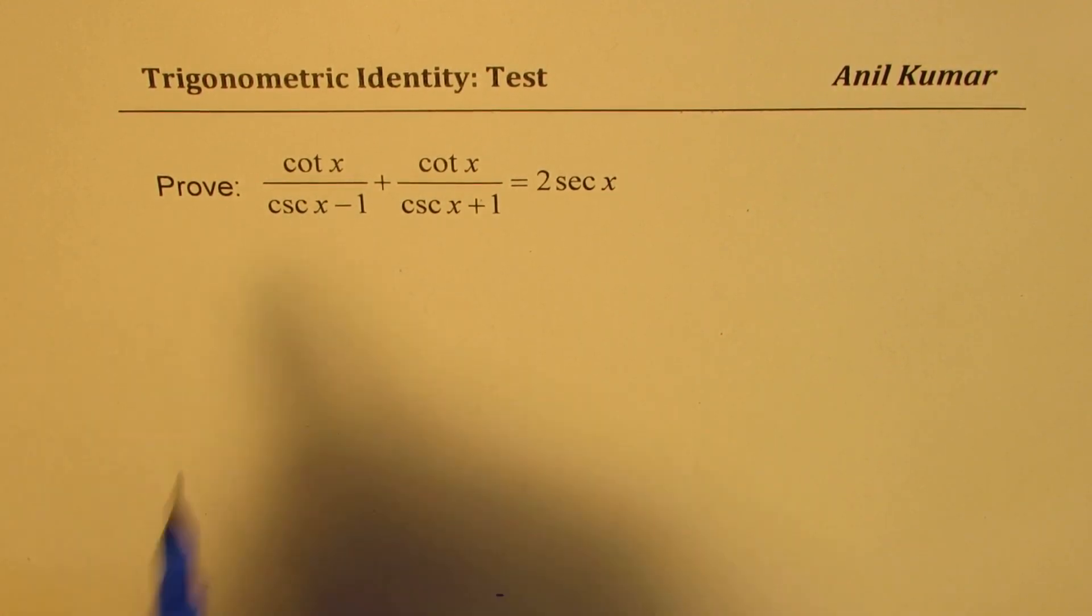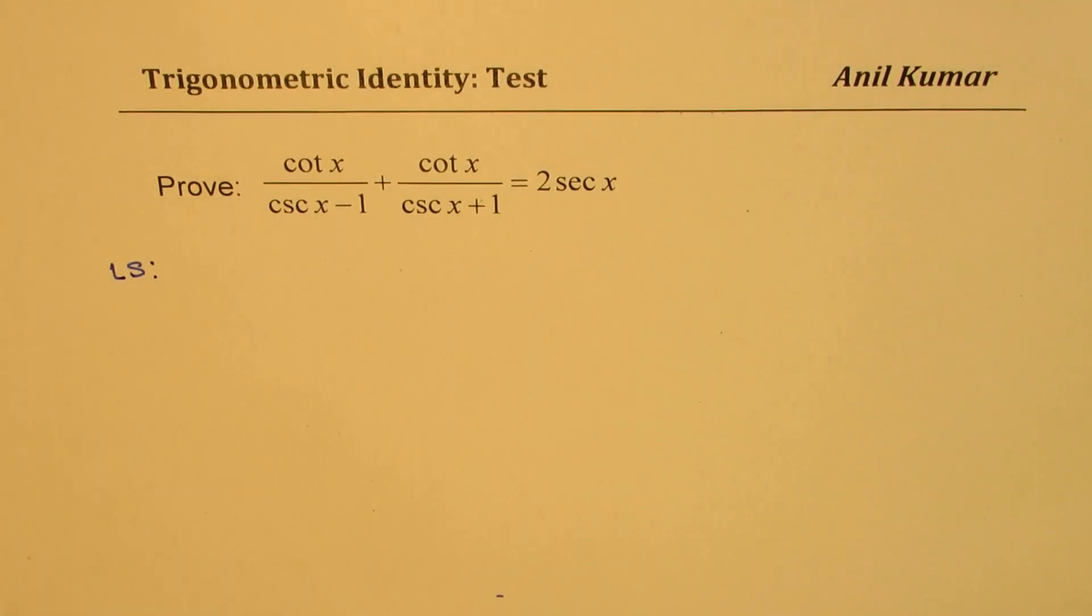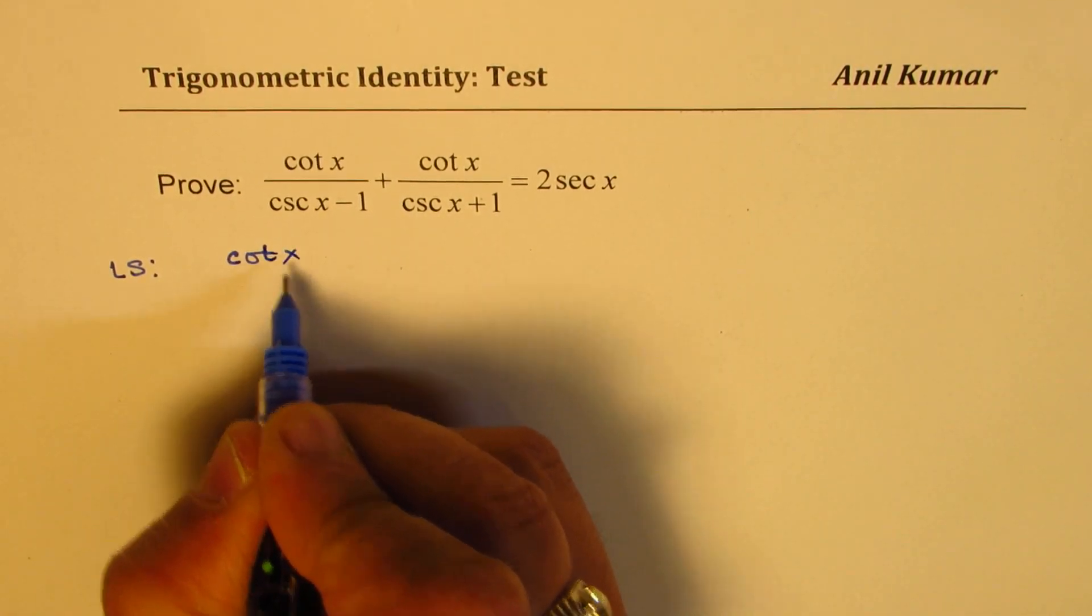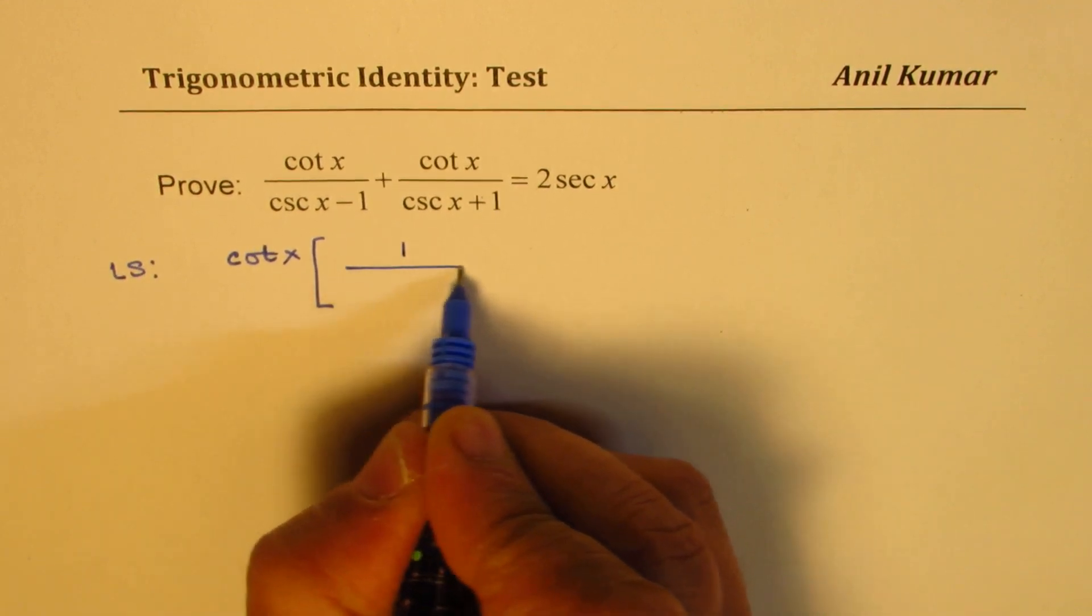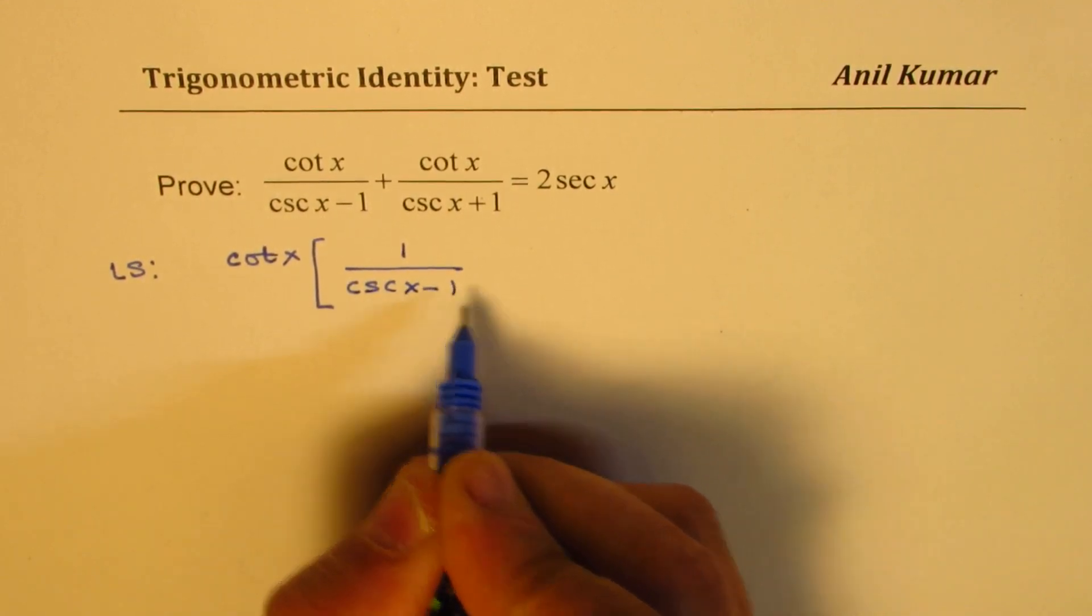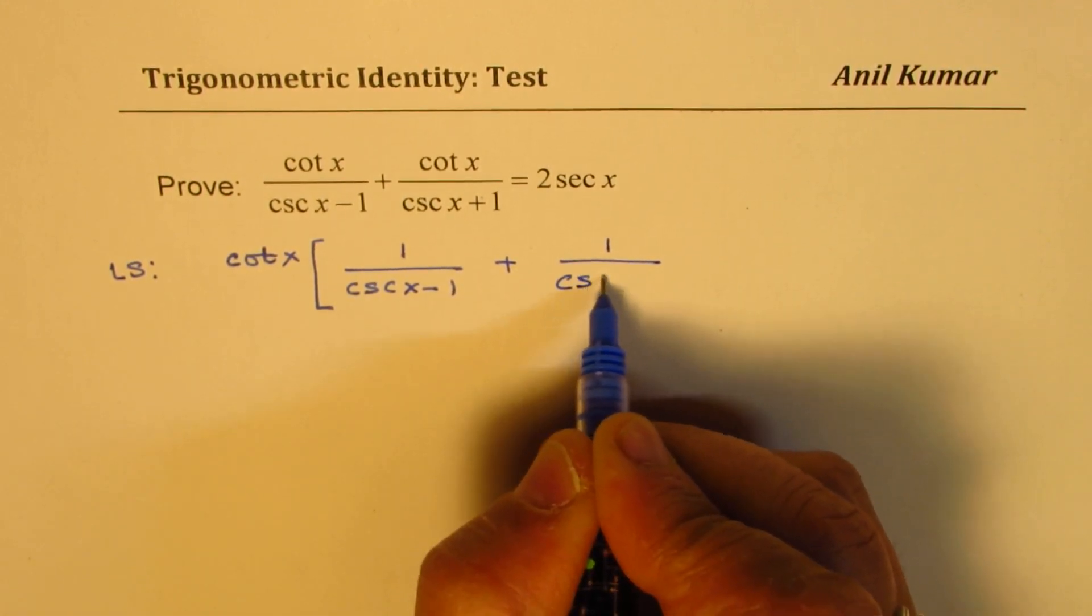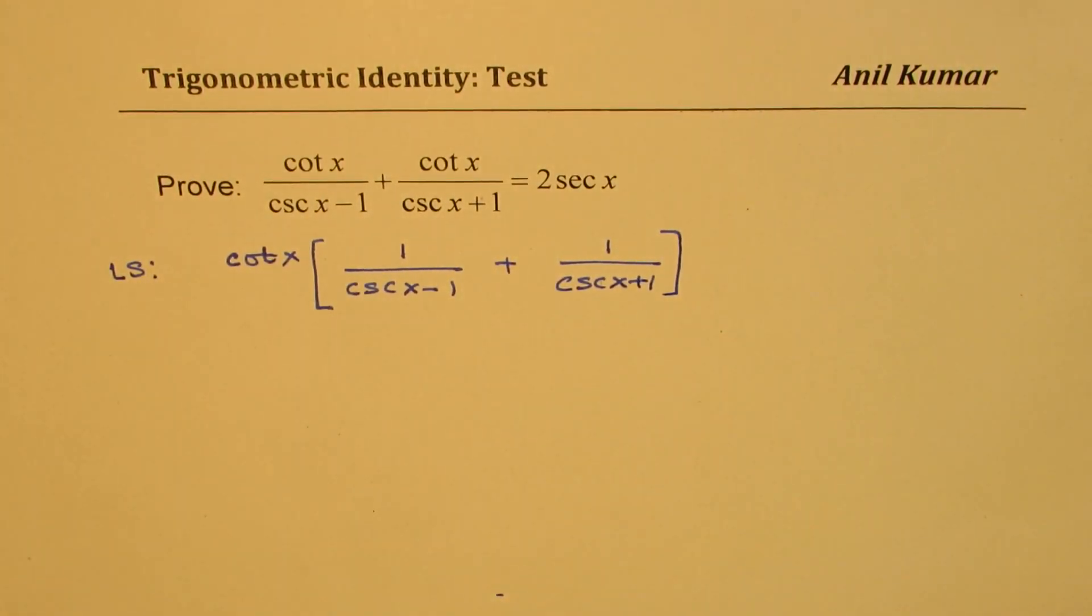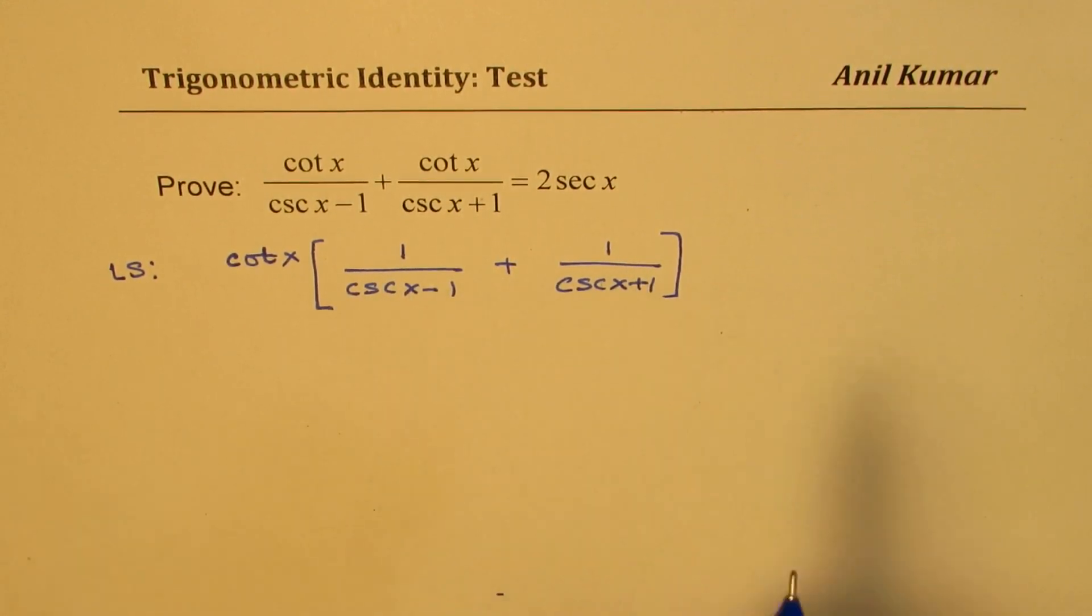Now in this, we can start with the left side since it is more complicated. Now straight away, you can see that cot x is common. So I could write this as cot x as a common factor, and I can rewrite this as 1 over cosecant x minus 1 plus 1 over cosecant x plus 1. Now we can have a common denominator, cross multiply, and simplify.